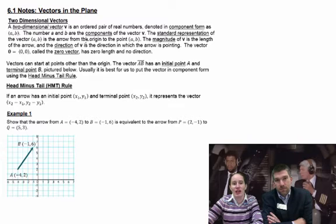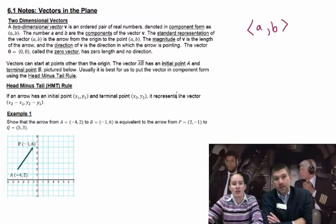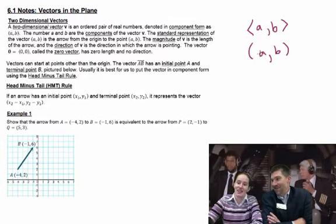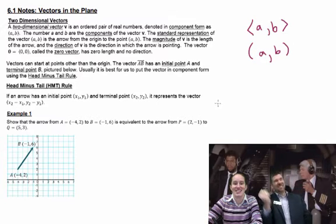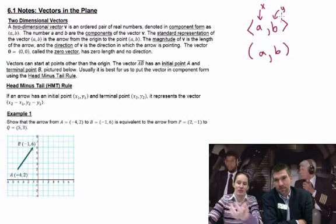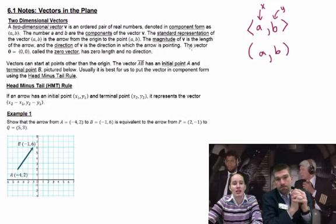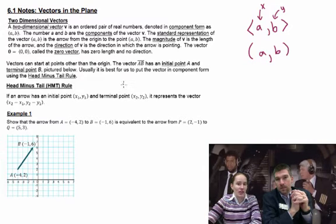So whenever we have a vector, we denote it in component form as A, B. Notice we've got these arrow brackets. They're pointy, and on anything you turn into us, it's a vector, it needs to be pointy. No parentheses. That's a point. But a vector is something that has magnitude and direction, and it needs to have these. The numbers A and B are the components of the vector, the first one is the X component, and the second one is the Y component. The standard representation of the vector A, B is the arrow from the origin to the point A, B. The magnitude of V is the length of the arrow, and the direction of V is the direction in which the arrow is pointing.